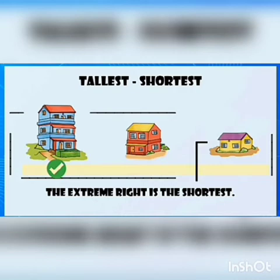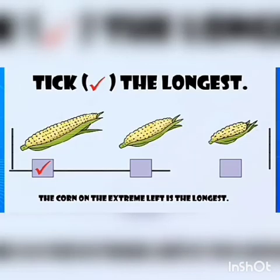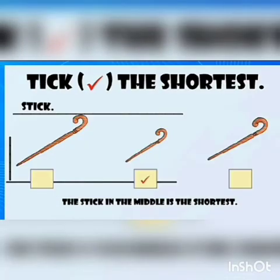Now, tick the longest. There are some pictures of corn. The corn on the extreme left is the longest. Tick the shortest.